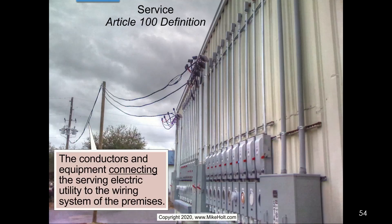Brian, go ahead and tell us about what an electrical service is. If you look at the graphic on my computer here, we've got the definition of a service. The service is the conductors and equipment connecting the serving electric utility to the wiring system of the premise. We can see our serving electric utility transformers are here.